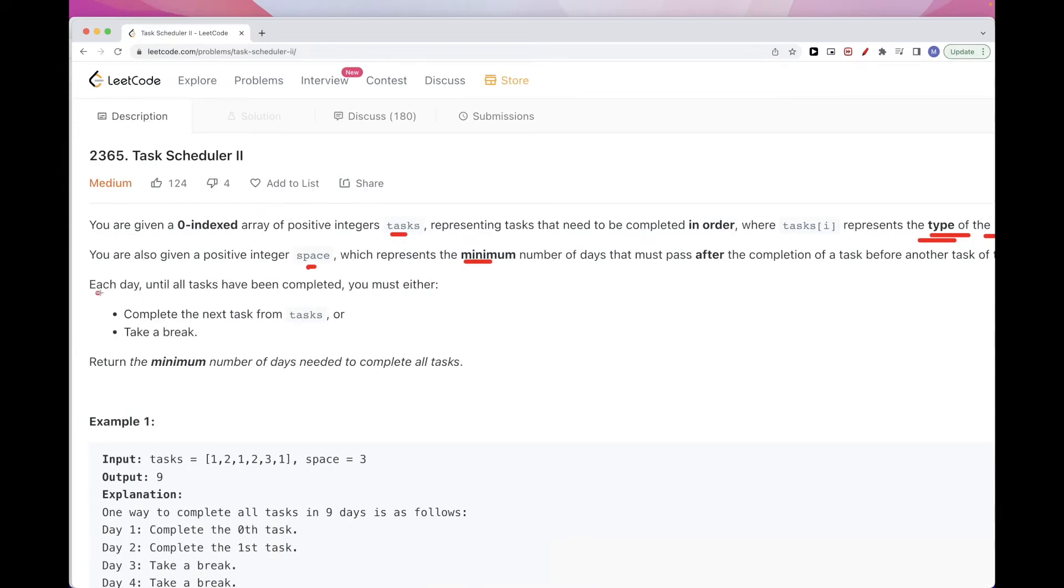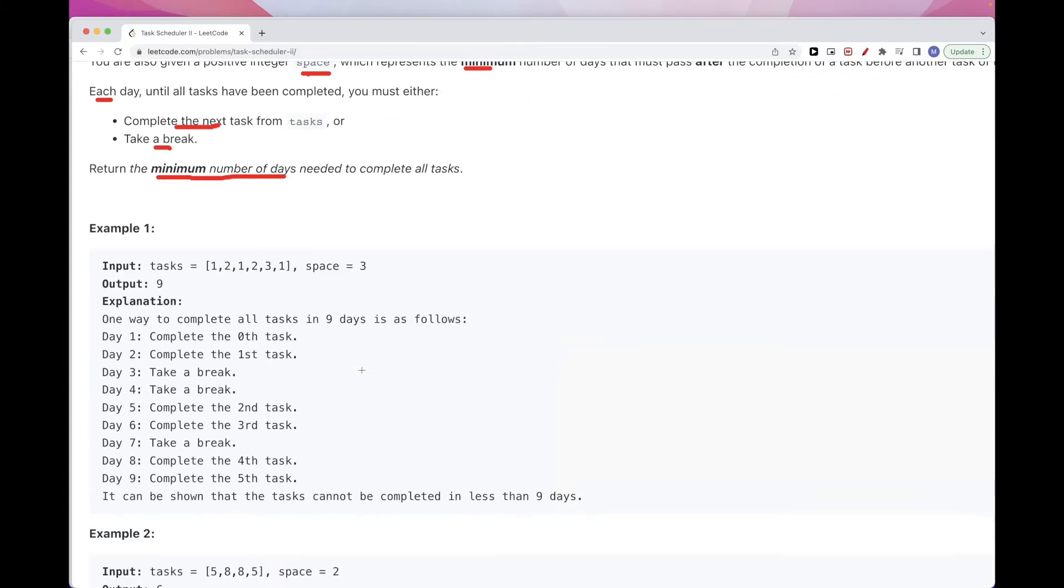And in each day we can either complete one task from the next task, so we have to do them in order, or we can take a break. And we take a break in order to be able to take the next tasks so that we can fulfill the requirement that the space between two tasks of the same type needs to be equal to space. And then we need to return the minimum number of days to complete all of the tasks.